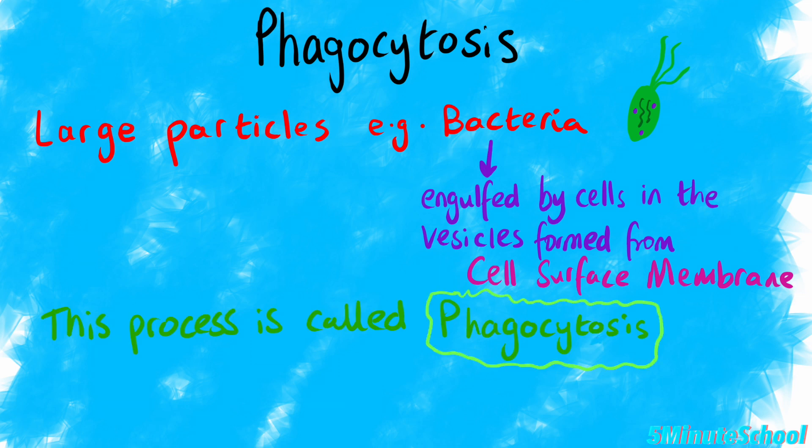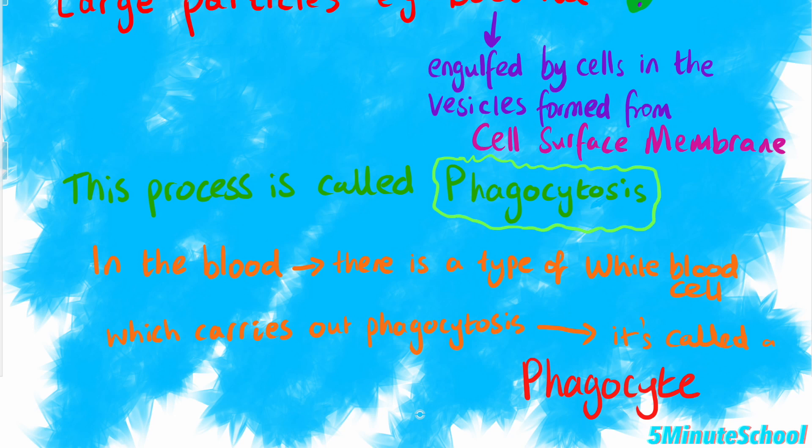In the blood, there are types of white blood cells that carry out phagocytosis, and they are known as phagocytes. They provide an important defence against pathogens that manage to enter the body. Some phagocytes travel in the blood but can move out of the blood vessels into other tissues.